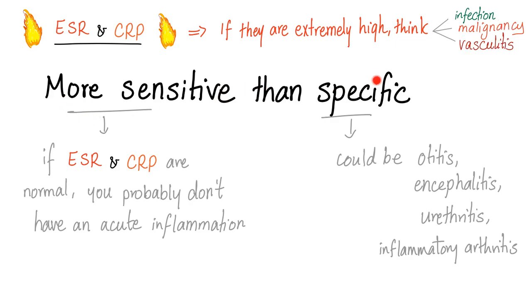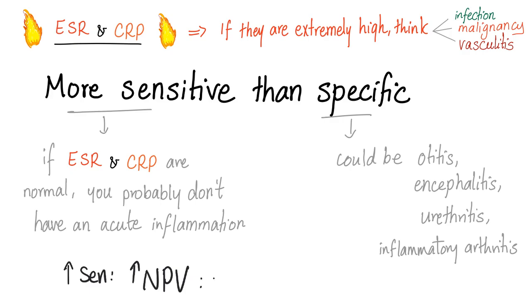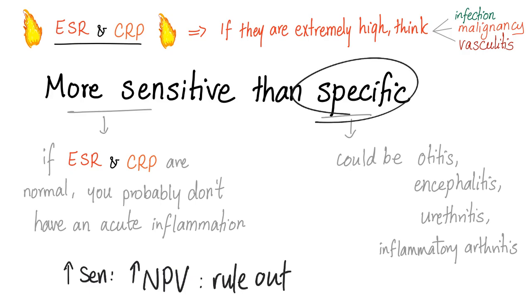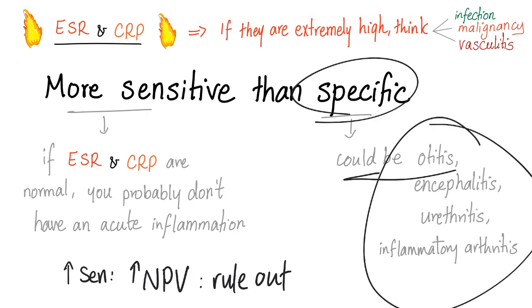ESR and CRP are more sensitive and less specific. Why more sensitive? Because they can rule out acute inflammation — if ESR and CRP are normal, you probably don't have acute inflammation. This is called ruling out a disease. A test with high sensitivity has a high negative predictive value and can rule out disease. Less specific because it can't tell you which kind of problem it is.